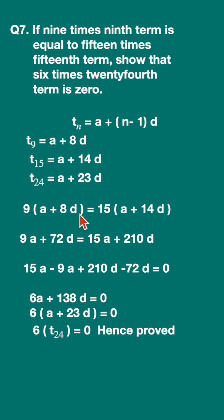This is equal to 15 times the 15th term, so 15 into a plus 14d. So we have 9 times the 9th term equals 15 times the 15th term. Now open the bracket and simplify this.